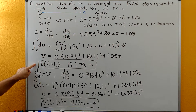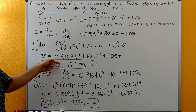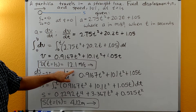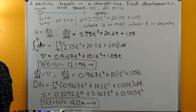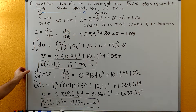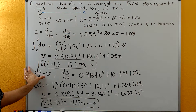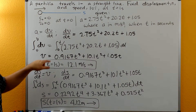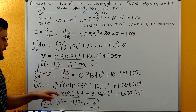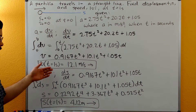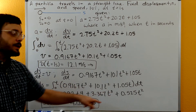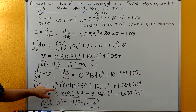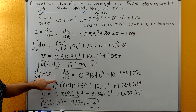We get v at t equal to one second by plugging one second into this expression, and we get positive 12.1 meters per second, which means the particle is moving to the right. Then to find the displacement, we use ds/dt equal to v. We substitute in our new expression for v and follow the same procedure — integrating the polynomial to get s as another function of t.